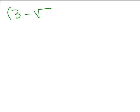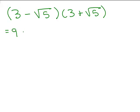Here's a special one: 3 minus square root of 5 times 3 plus square root of 5. Do you recognize this from when you first started multiplying binomials? Let's go ahead and do the FOIL method. 3 times 3 is 9. Outer: 3 times square root of 5 is plus 3 square roots of 5. Inner: the only difference is I have a minus sign, so it's minus 3 square roots of 5. Last: minus square root of 5 times plus square root of 5 — that's a minus, and square root of 5 times square root of 5 is just 5.